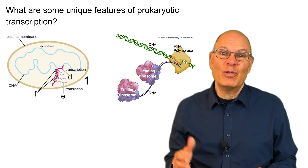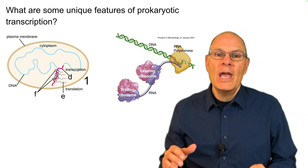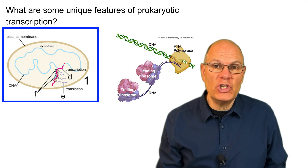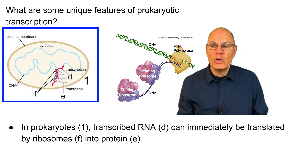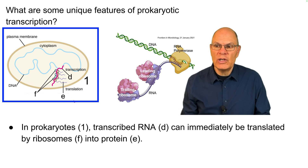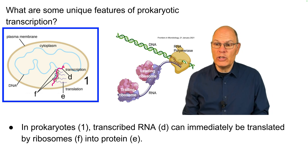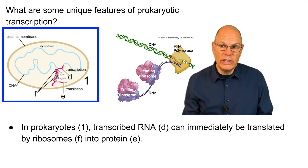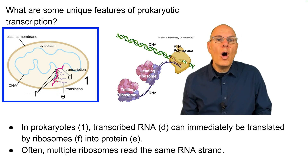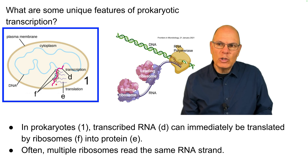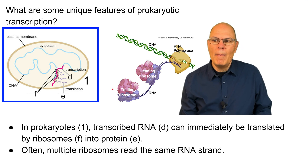What are some unique features of prokaryotic transcription? Prokaryotes don't have a nucleus, so there's no separation between the genetic material and the cytoplasm. As a result, transcribed RNA can immediately be translated by ribosomes into protein. Often, multiple ribosomes read the same RNA strand simultaneously, and these multiple ribosomes are sometimes called polysomes.